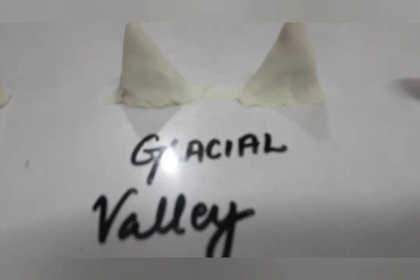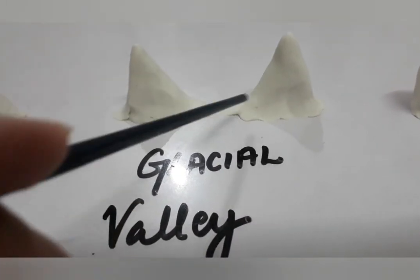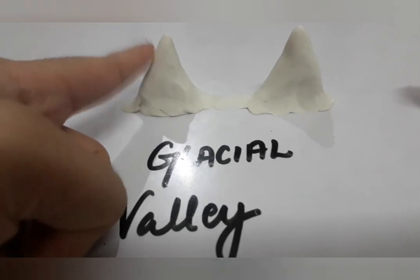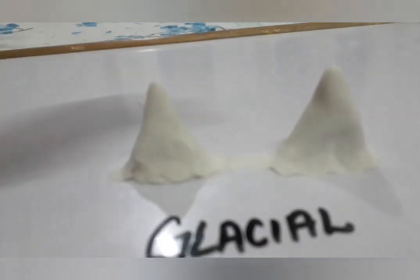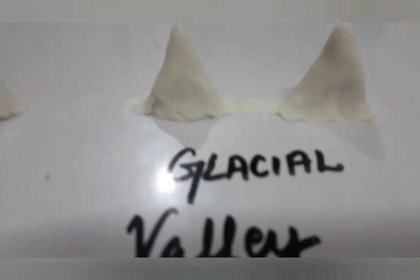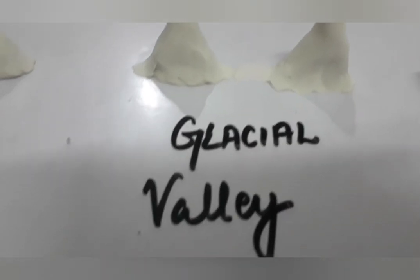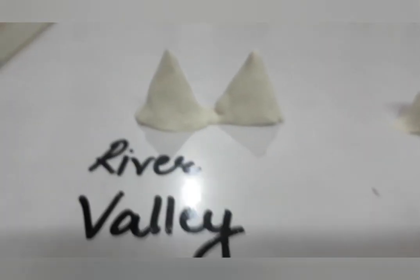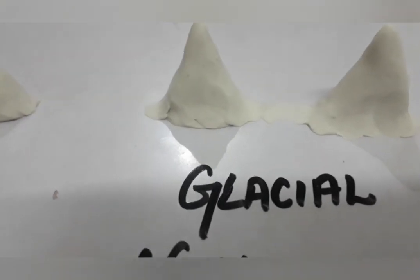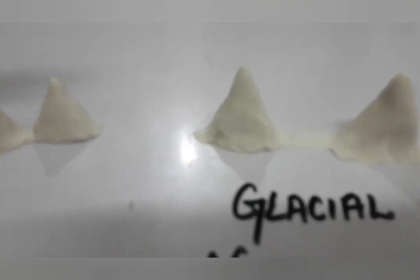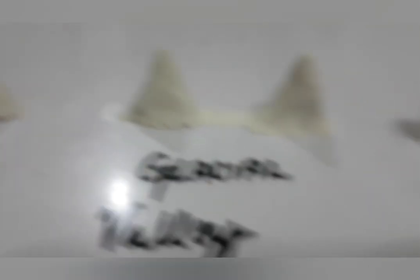Moving towards the next one — the glacial valley. Due to the glaciers it is U-shaped, not V-shaped. You can see it is U-shaped. This is activity-based learning, so doing activities like this will help you remember things better. River valley is V-shaped, glacial valley is U-shaped. The glaciers are passing and moving in this way, so the sides are wide apart and it looks like a U.